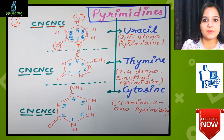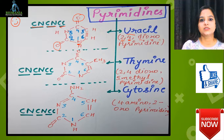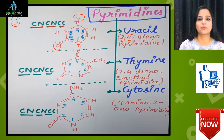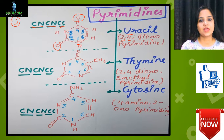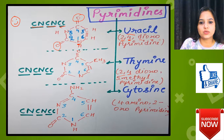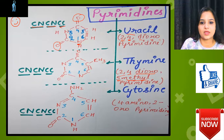Now let's move towards thymine. The difference between uracil and thymine is only the presence of a methyl group — it is not present in uracil but is present in thymine. The base structure is 2,4-dioxo, same as uracil, and on the fifth carbon atom a methyl group is present.